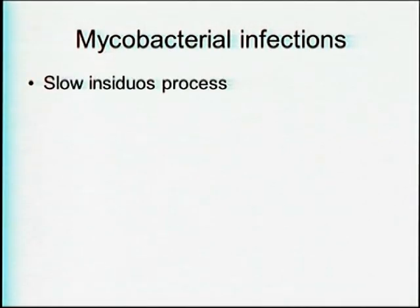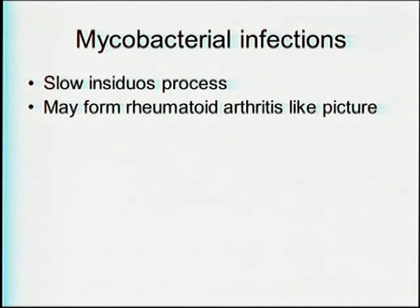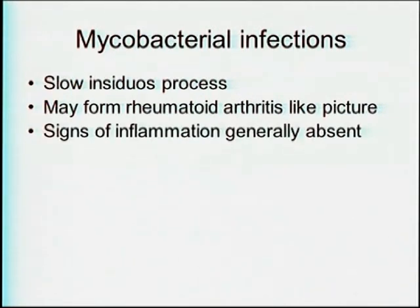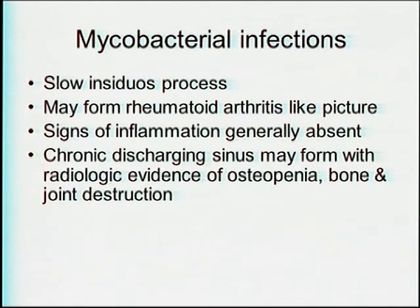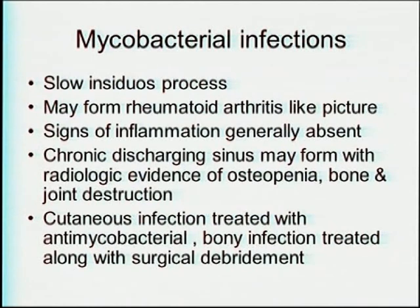Mycobacterial infections are a slow and insidious process and may form a rheumatoid arthritis-like picture, making them very difficult to diagnose initially. A rheumatoid factor evaluation and joint aspirate sent for cultures and mycobacterial cultures should be obtained. Since signs of inflammation are generally absent, it may present as a chronic discharging sinus from the wrist with radiological evidence of osteopenia and bone and joint destruction. Cutaneous infections can be treated with antimycobacterial agents; however, bony infection requires full surgical intervention with proper joint debridement and drainage.